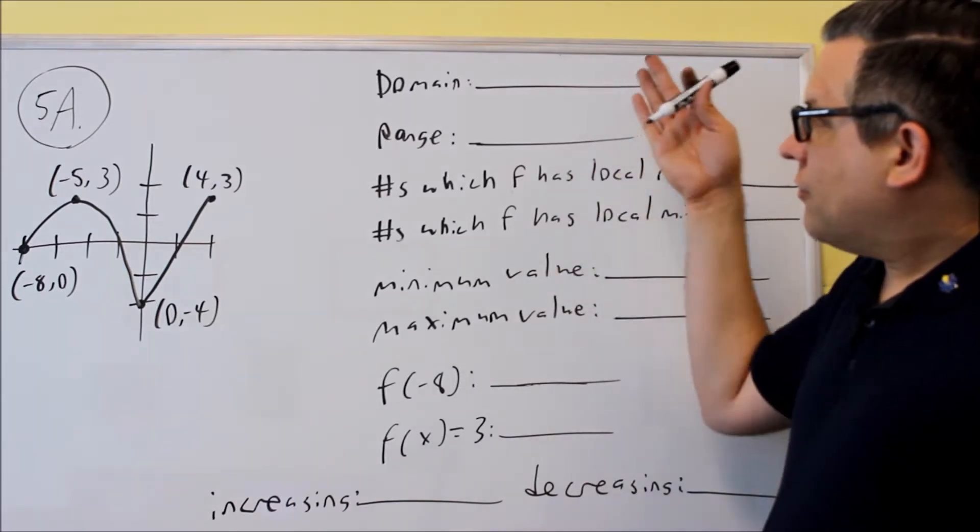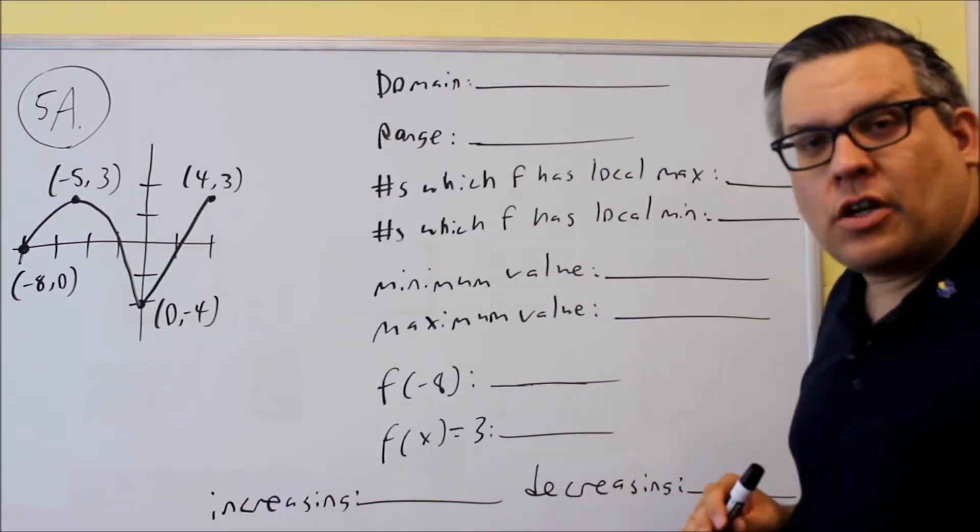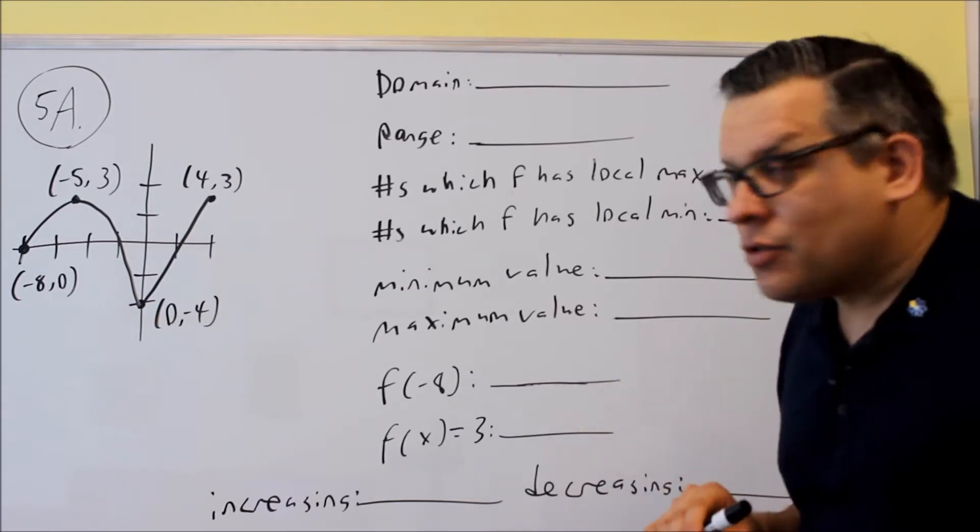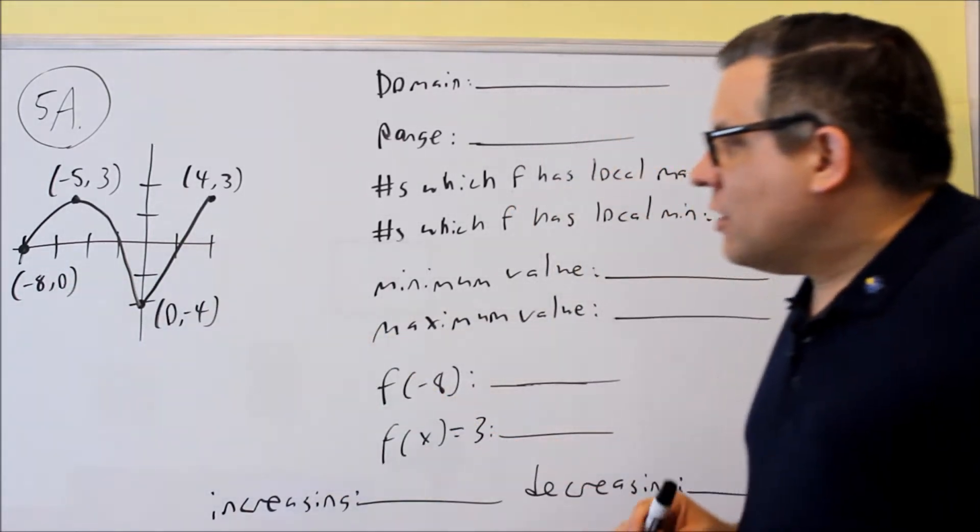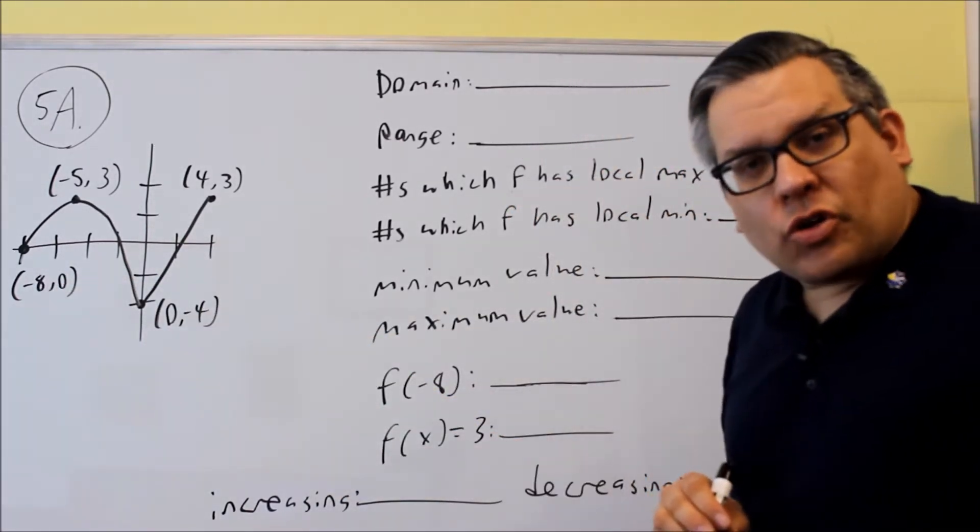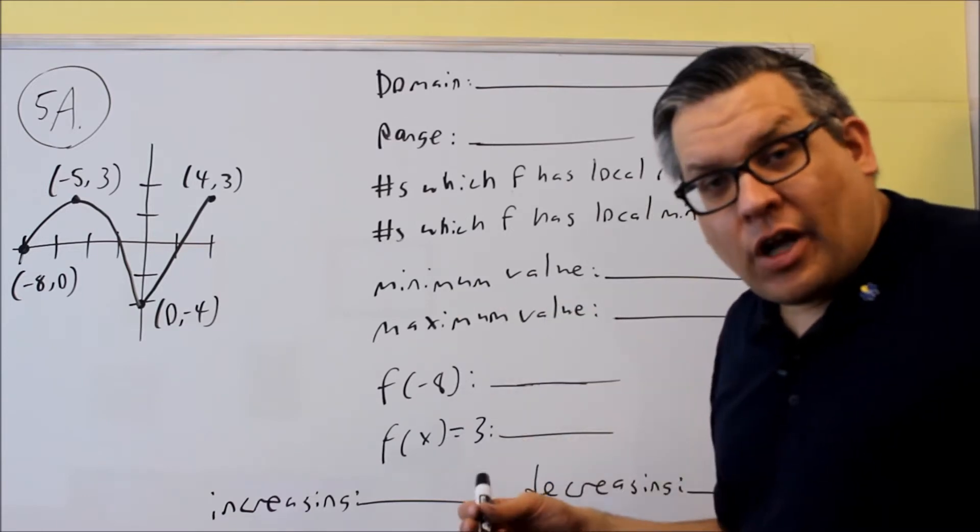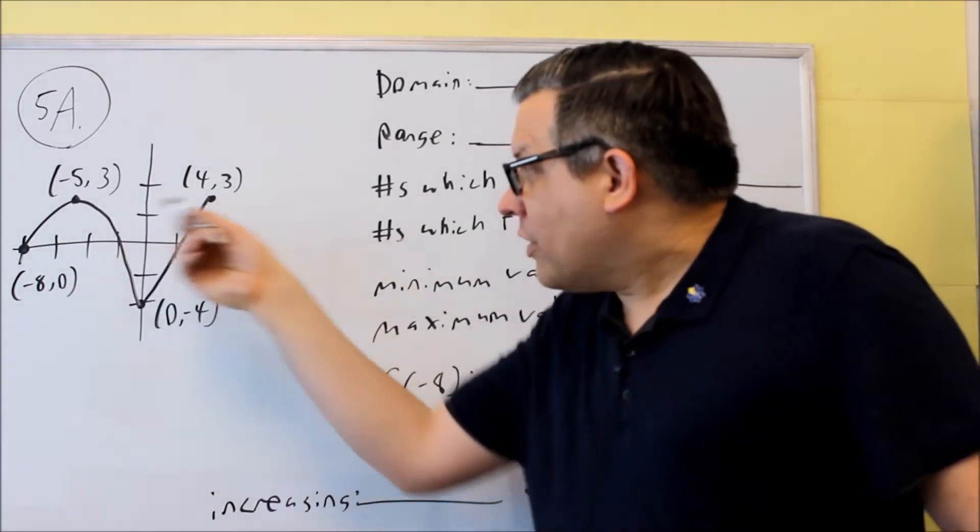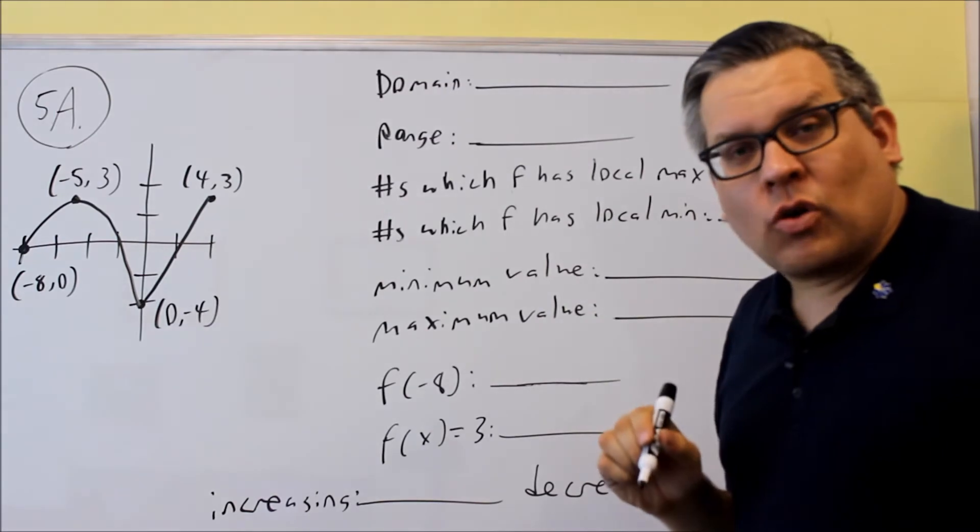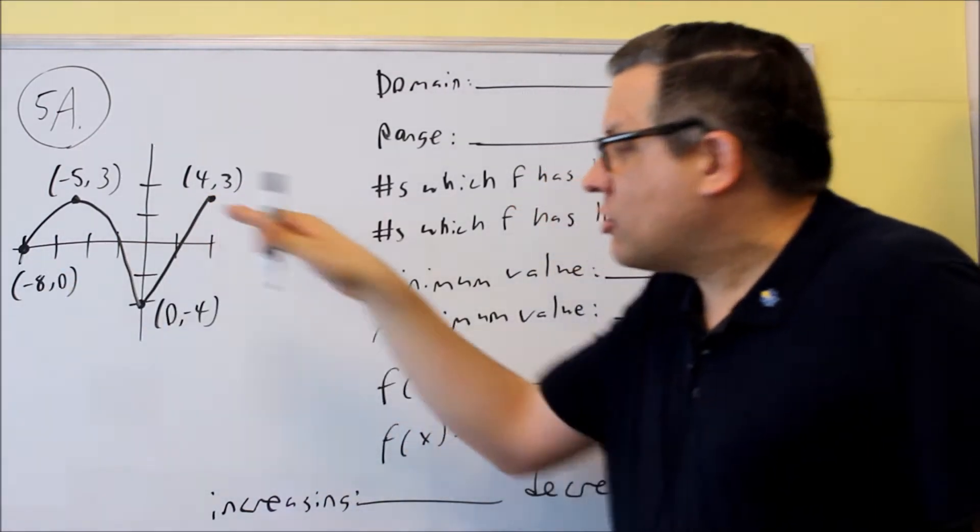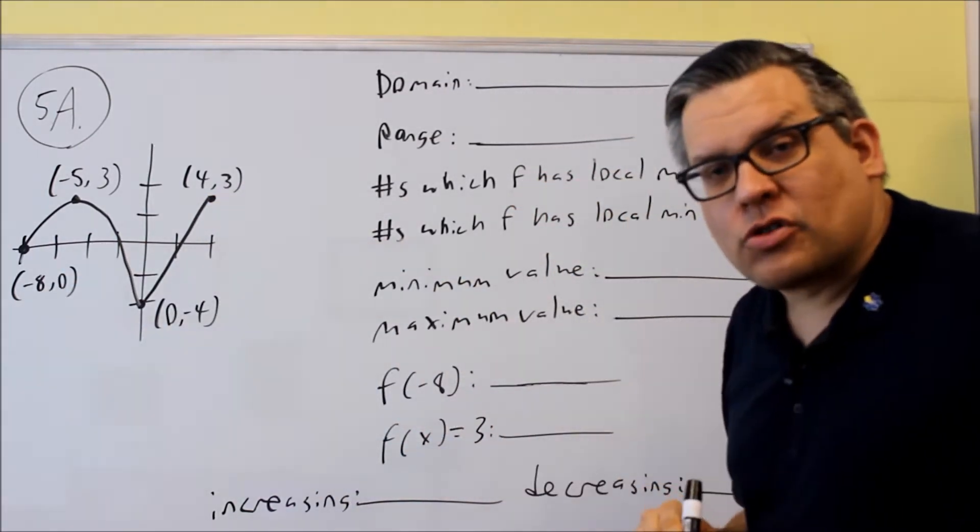So first we're going to do domain. Now domain is talking about the x values that the graph is using here. If you see closed circles you want to put brackets on your answer. If one of these points was an open circle, then you'd use a parenthesis. So pay close attention to whether you have closed circle or open circle.